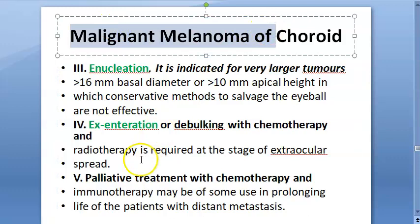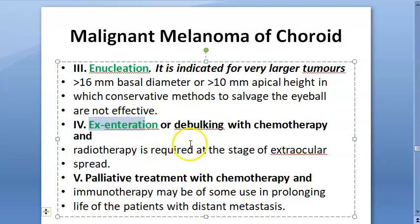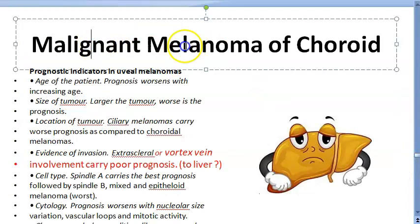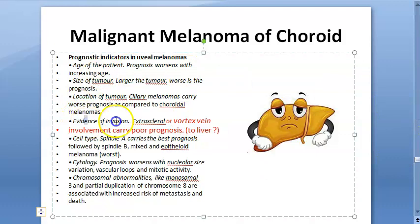Enucleation is indicated for large malignant melanoma of the choroid — remember, absolute indications of enucleation are retinoblastoma and large malignant melanoma of choroid. Exenteration (removal of the entire orbital contents) is done when there is extraocular spread. For distant metastasis, palliative chemotherapy and immunotherapy are used. Prognosis is poor if there is evidence of invasion.